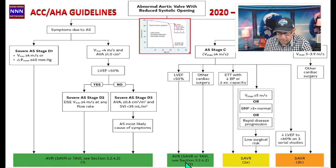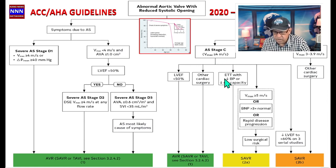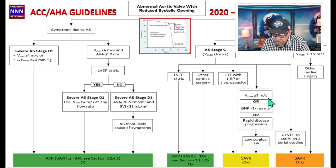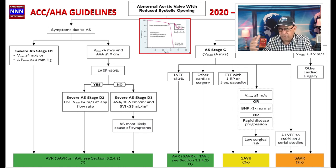For patients without aortic stenosis symptoms, we look at Stage C and Stage B. If left ventricular ejection fraction is less than 50%, we consider aortic valve intervention. If other cardiac surgeries are contemplated — such as mitral regurgitation repair, coronary artery bypass surgery, or mitral valve replacement — we replace the aortic valve at the same time. If the patient can exercise, an exercise stress test looking for blood pressure drop and reduced exercise capacity can help identify candidates for valve replacement — a Class 2a indication. V max greater than 5 m/s, rapid disease progression, or ejection fraction dropping below 60% on three serial studies are also indications for surgical aortic valve replacement.